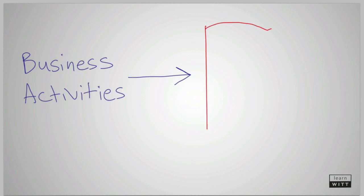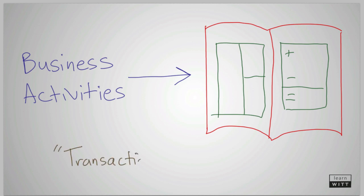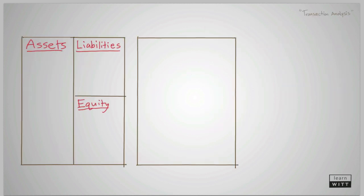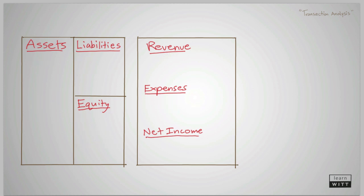When an activity occurs in a business, it will be reflected in the books. The process of determining how an activity of a business is translated into the books is called transaction analysis. When a transaction takes place, it is going to be reflected on the books. Each component of the books is comprised of accounts. The books have different accounts to keep track of the different amounts in each section of the balance sheet and income statement.